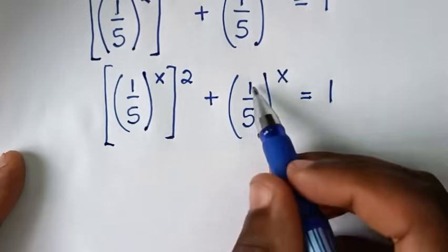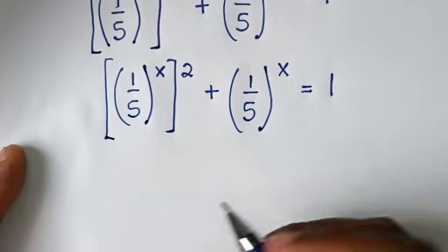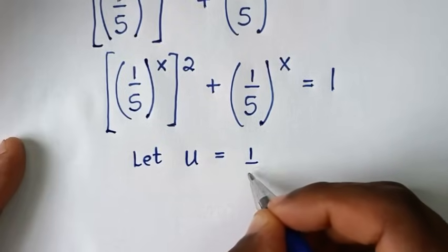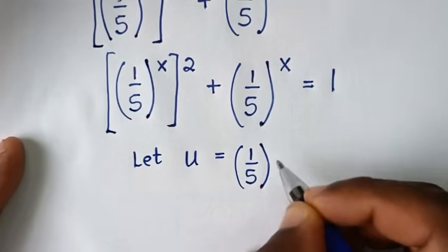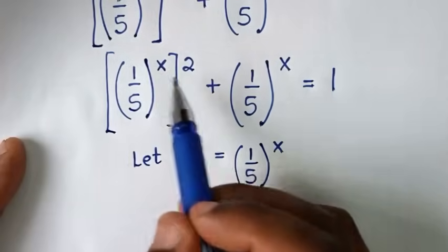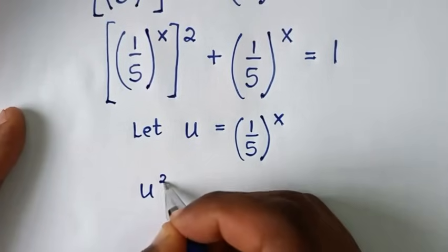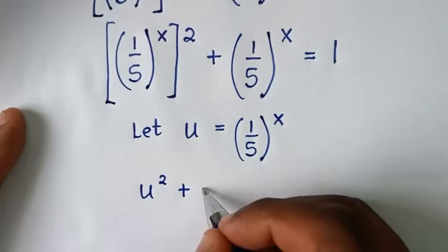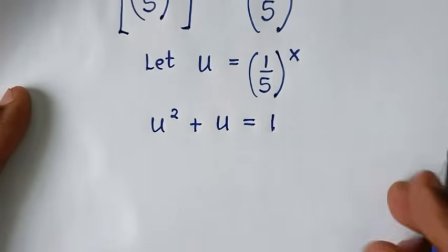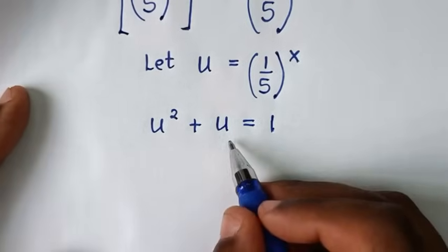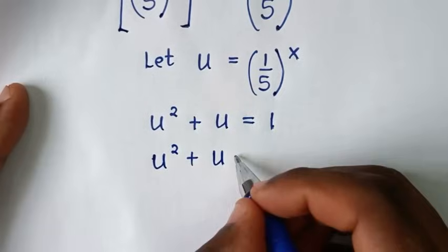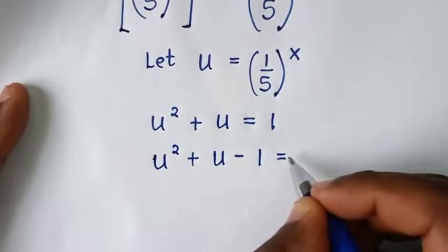Here, (1/5)^x is common, so we let u equal (1/5)^x and substitute. Our equation becomes u squared plus u is equal to 1. Taking 1 to the left side gives us u squared plus u minus 1 equals 0.